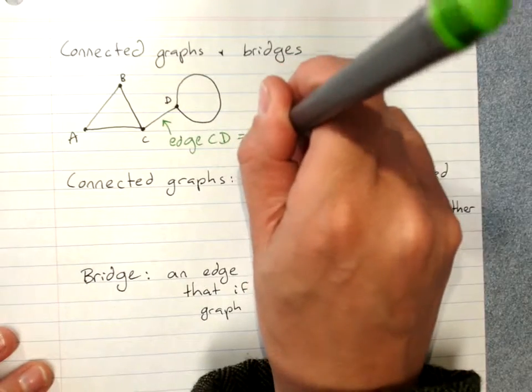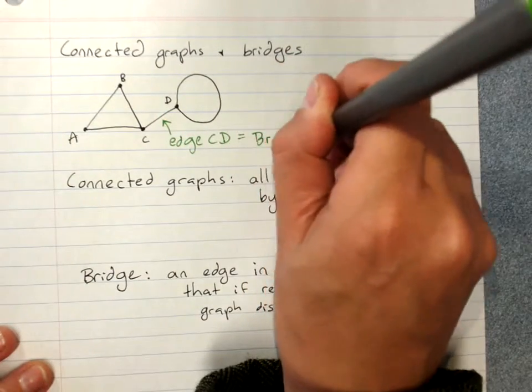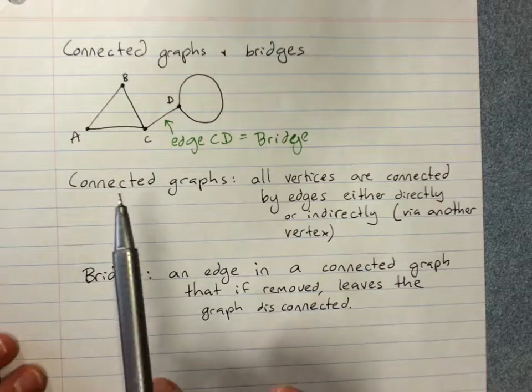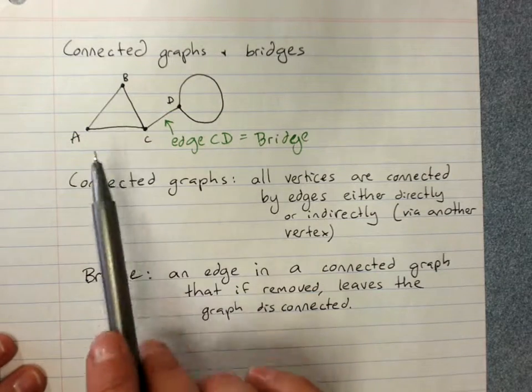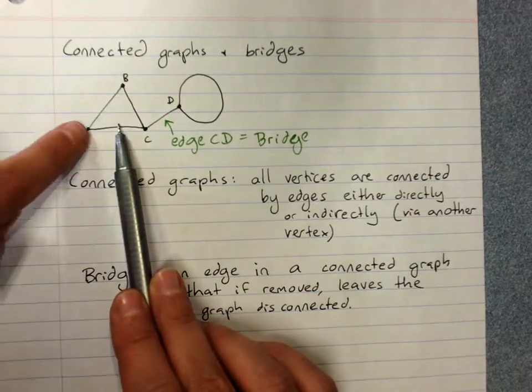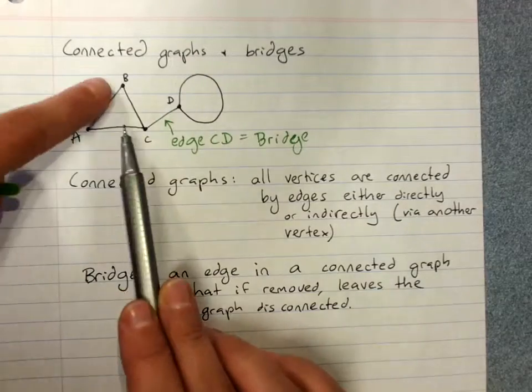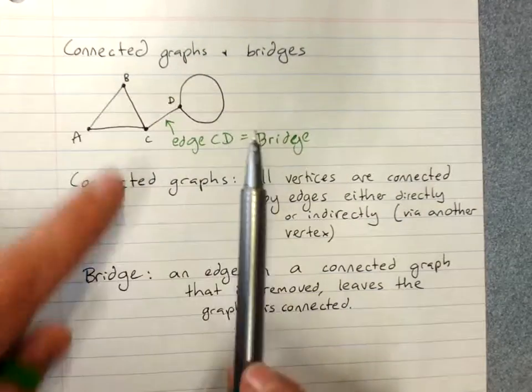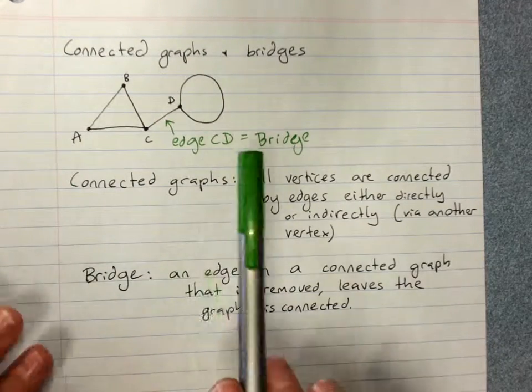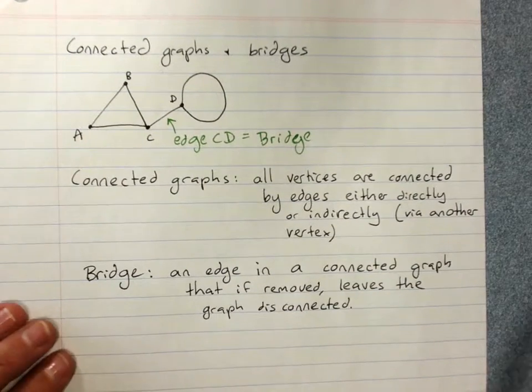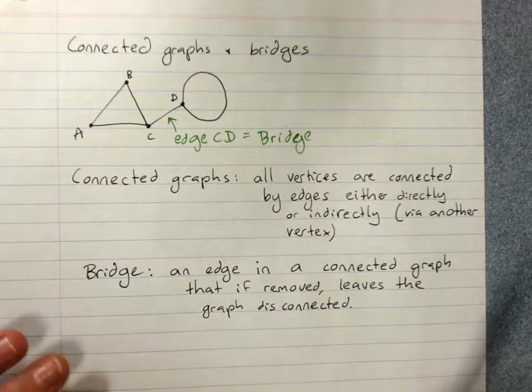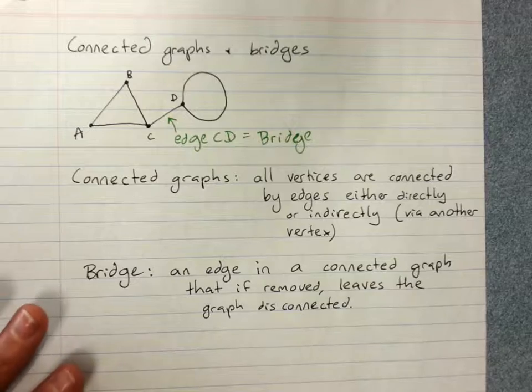Because if I took this out, the whole graph would no longer be connected. Anything else, there's another path. If I lose AC, well, A can still connect there. If I lose BC, we can still connect here. So a bridge is a possible point of failure. Where if something goes wrong on that edge, the whole thing's disconnected.